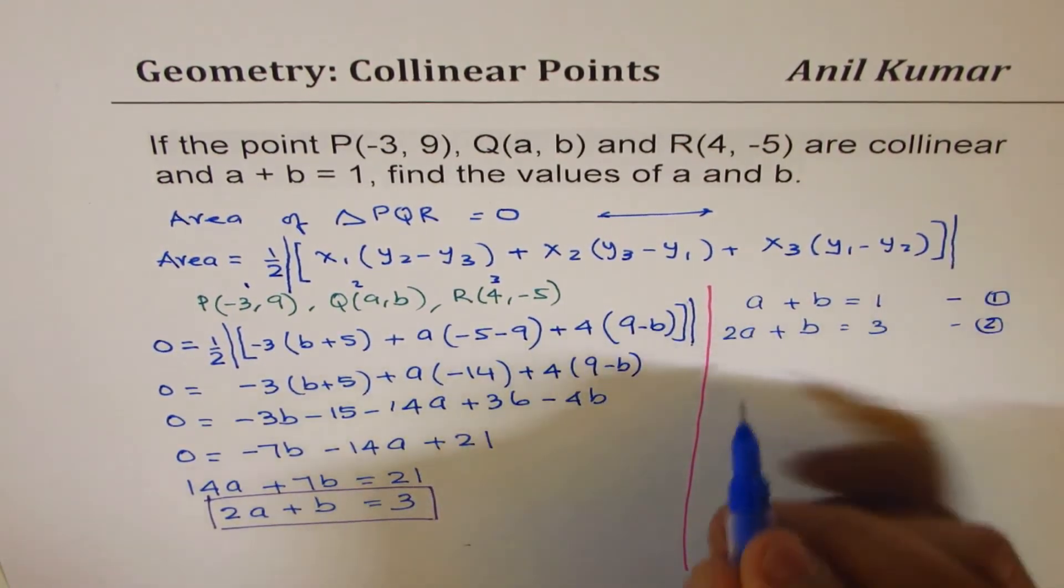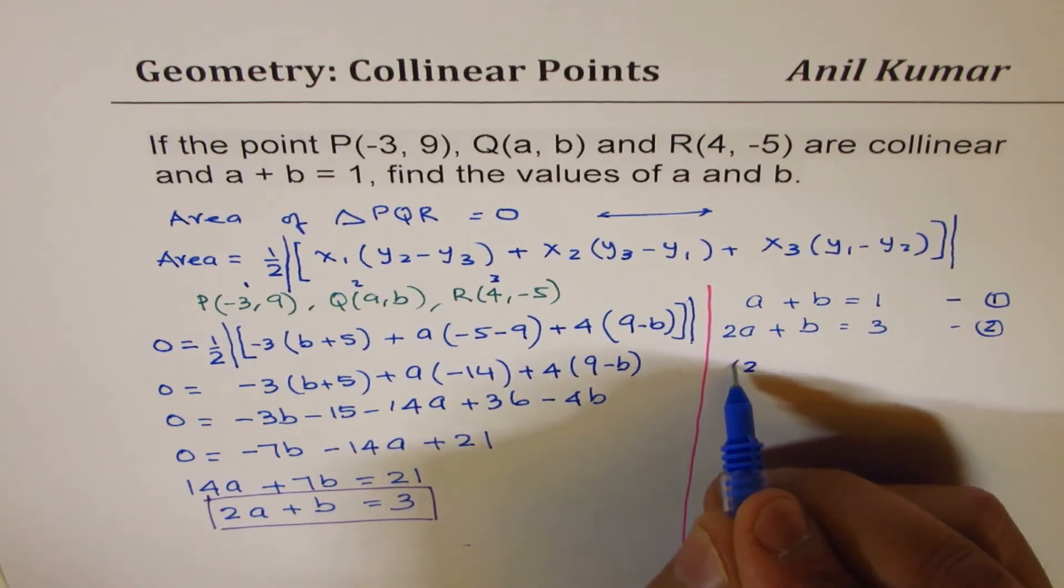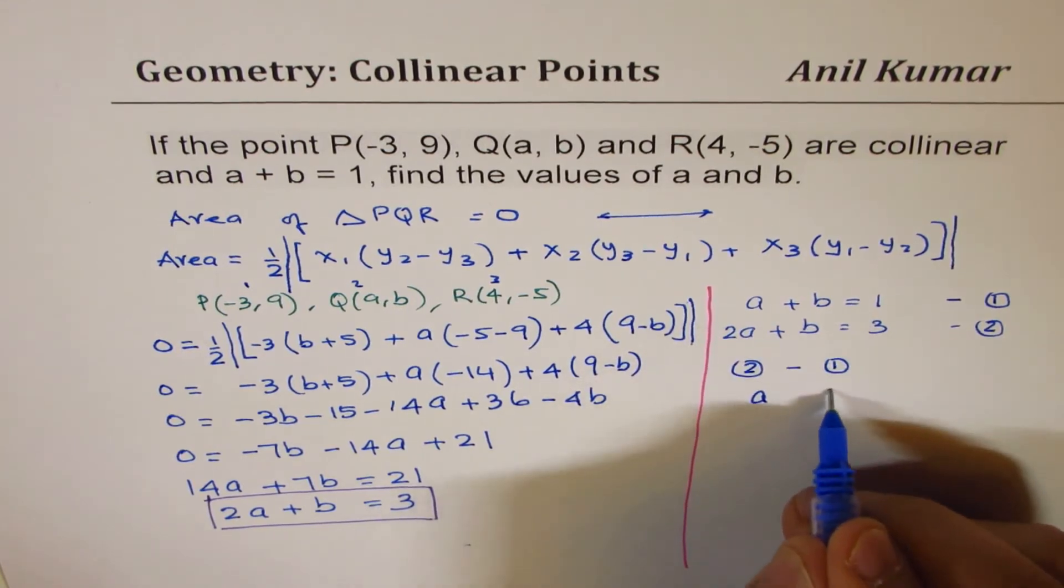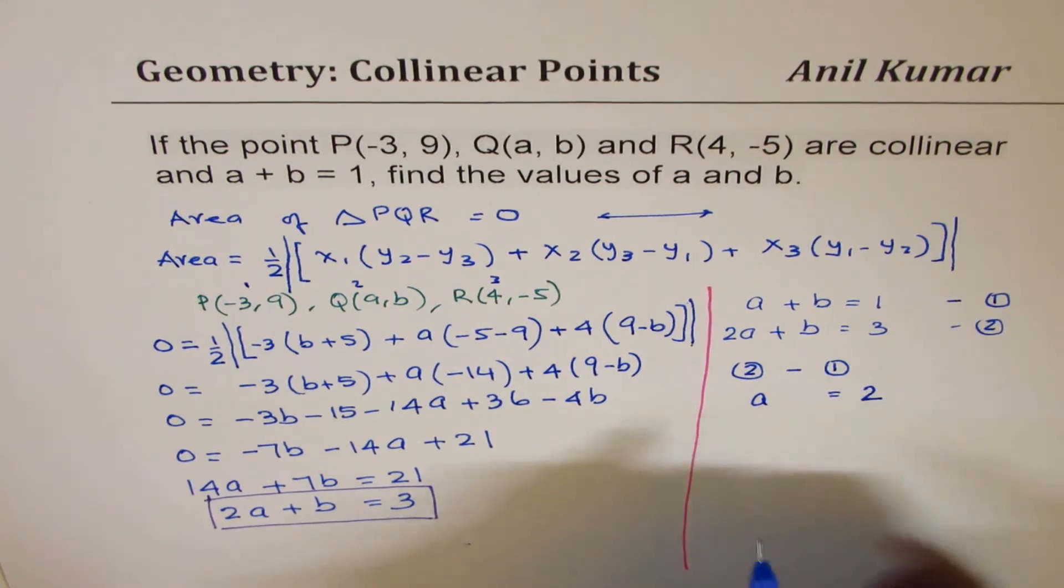So if I do equation 2 take away equation 1, 2A minus A is A, B minus B is 0, and 3 minus 1 is 2. So we get A equals to 2.